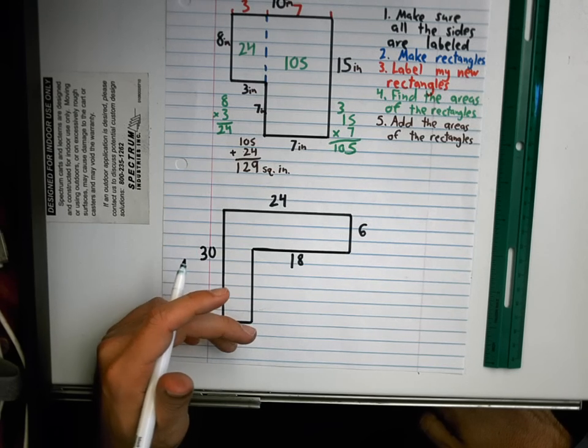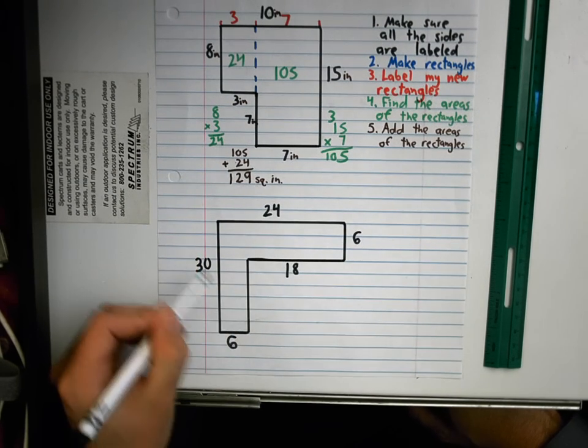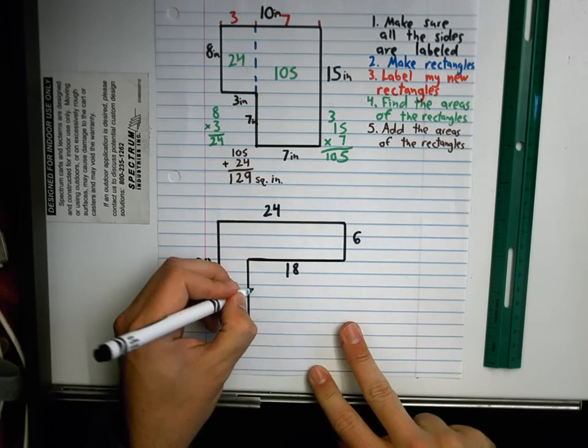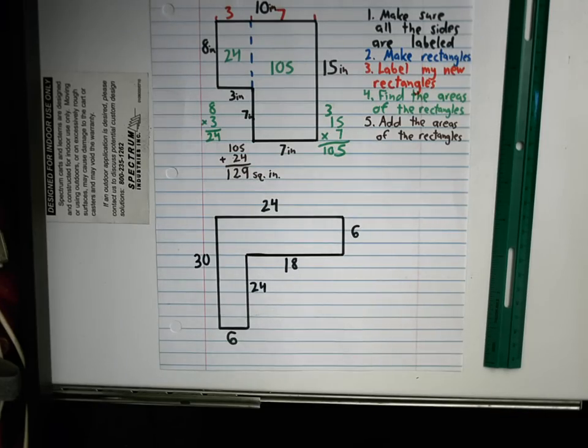Justin. 12. No. Because 6 plus 12 doesn't equal 30. 24. 24. Now my sides are labeled. I'm going to make new rectangles.